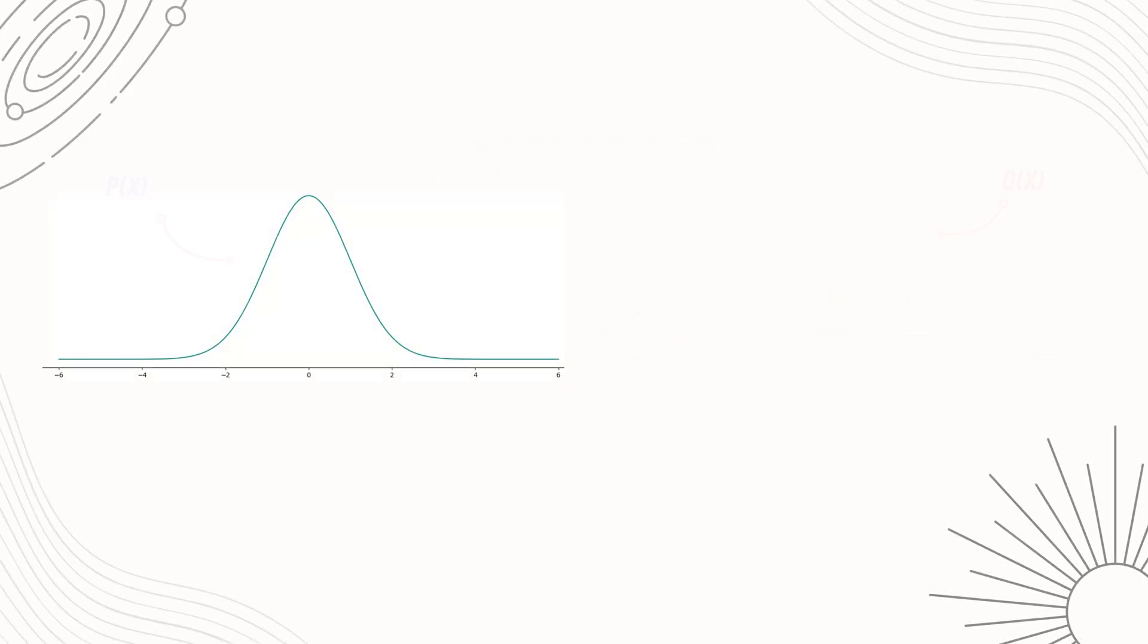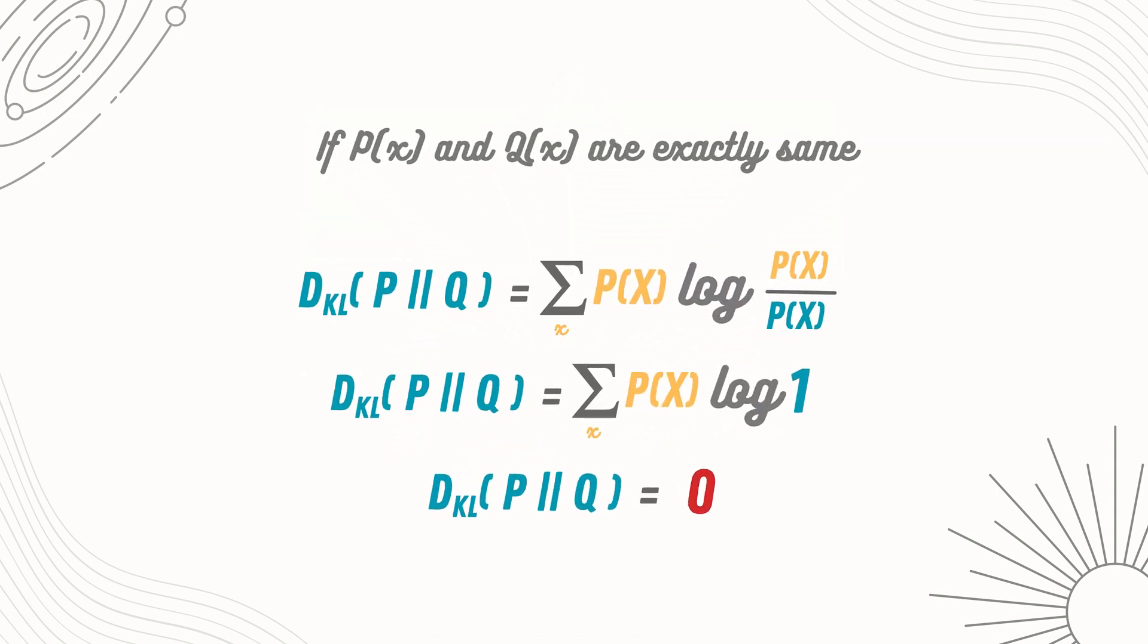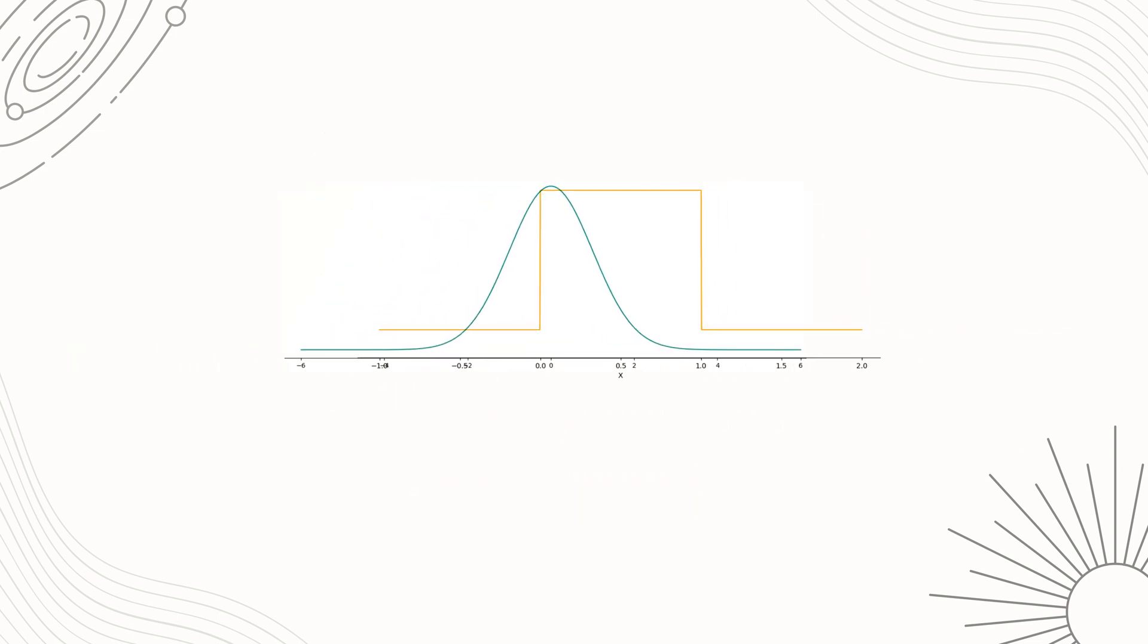If we look at it graphically, we can see if two distributions p and q are similar, then we get a low number, and if they are exactly the same, then we get log 1, which is equal to 0. If the distributions are very different, then we get a high number basically stating it grows as the distributions become different.